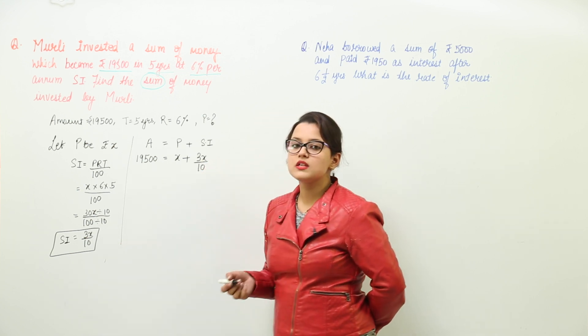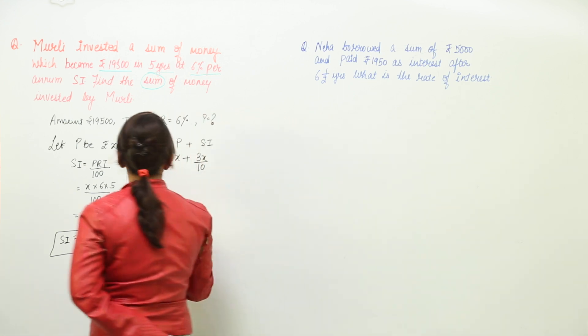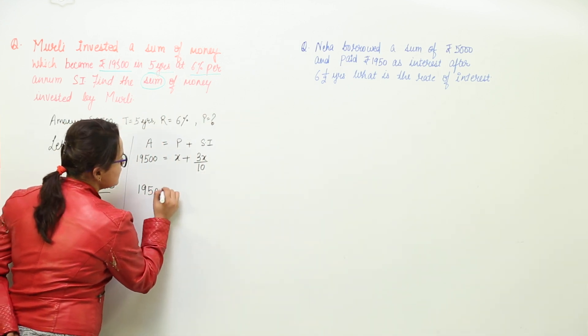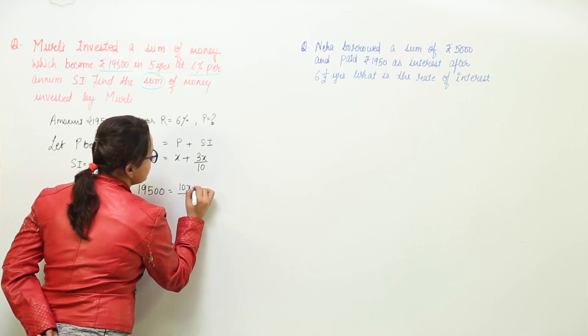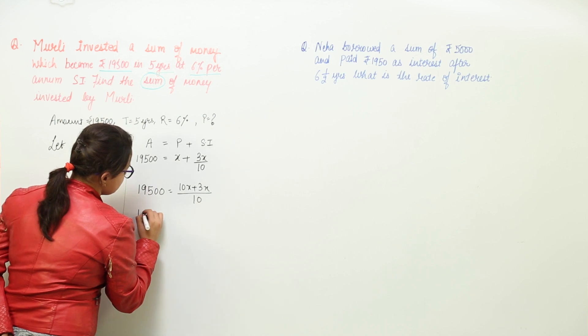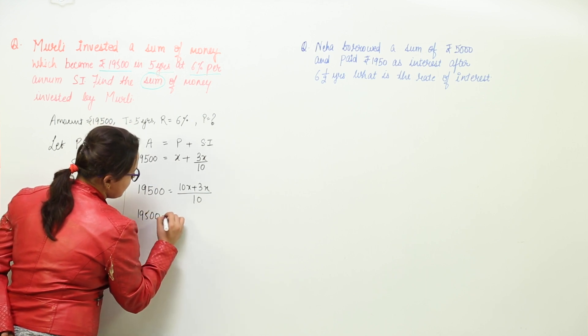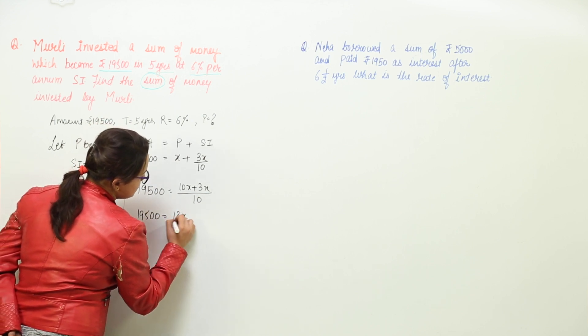And we can solve this equation further which would be equal to 19,500 equal to taking the LCM giving you 10x plus 3x. Now on solving this we get 19,500 equal to 13x upon 10.